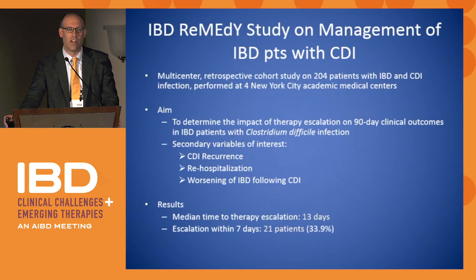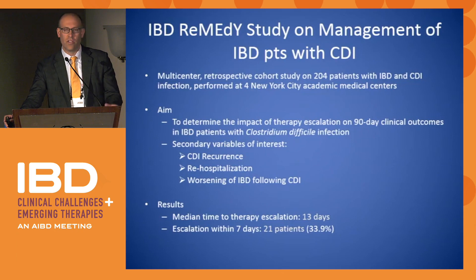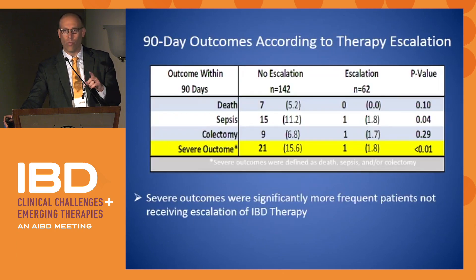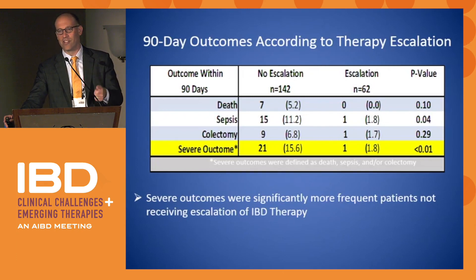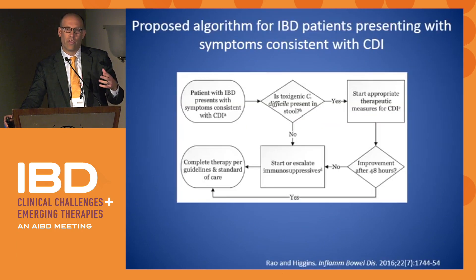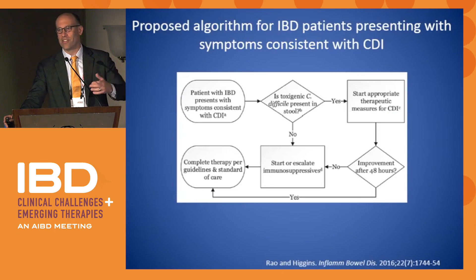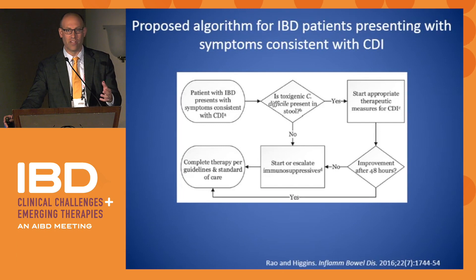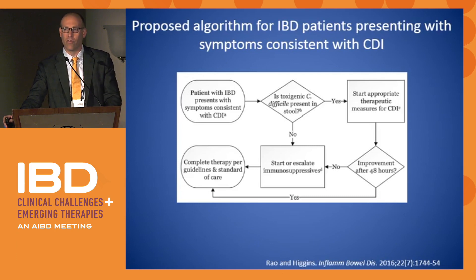Looking at the results, the median time to therapy escalation was about 13 days, and about a third of the patients were escalated within a week. All patients but one that had a severe outcome — sepsis, colectomy, or death — were patients that were not escalated. The one patient that had a negative outcome was an inpatient with severe UC who got a dose of infliximab and within a couple of days required surgery. So when thinking about how to manage your IBD and C. diff patient: if your patient's flaring, you're going to check C. diff. If positive, first-line use vancomycin. I would not be hesitant to escalate IBD therapy — I don't think you need to wait a certain amount of time as long as the vancomycin is on board.